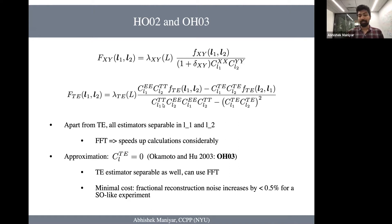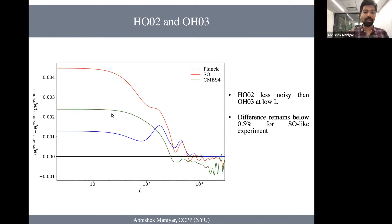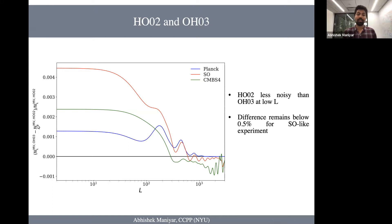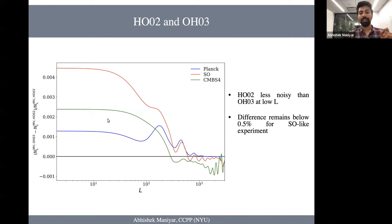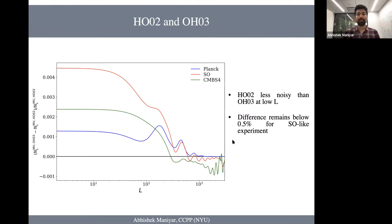Of course, this comes at a penalty of increased reconstruction noise. What I'm plotting here is the difference in reconstruction noise when you use the Okamoto-Hu approximated minimum variance estimator, subtract the noise from the Hu-Okamoto minimum variance estimator, and take the fractional difference. Different colors specify different experiments: a Planck-like experiment, a Simons Observatory-like experiment, and green is basically a CMB-S4-like experiment. As you can see, the fractional noise penalty is less than 0.5%, which is really not a lot. So this kind of approximation is acceptable.